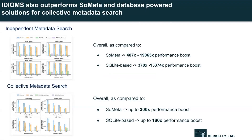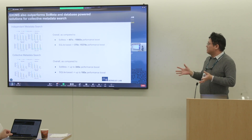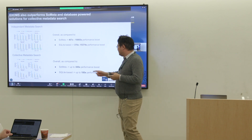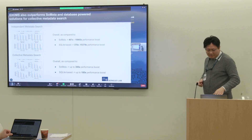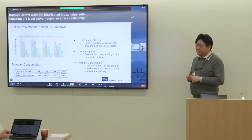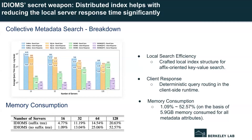Experimental results show that compared to existing well-known metadata search solutions such as SolMeta or SQLite-based solutions, we achieved 300x to 900x performance boost for the independent metadata search scenario, and 180x to 300x performance boost for the collective metadata search scenario. The breakdown also shows improved local search efficiency with the crafted affix-oriented key-value index structure.